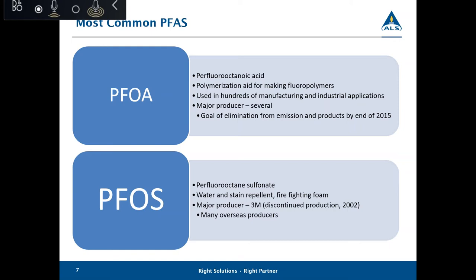PFOA and PFOS had many industrial applications — processing aids and surfactants used in emulsion polymerization for polymers, stain repellents for fabrics, surface activating agents, a variety of products used in firefighting foam, coatings, and production of electronic parts. PFAS has been phased out of production and use throughout the U.S. and other first world countries. 3M, for example, ended production in 2002, and around that same time, production was started in Asia by other companies and has increased in those regions since.